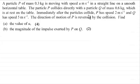Immediately after the particles collide, P has a speed of 2 meters per second and Q has a speed of 5 meters per second. The direction of motion of P is reversed by the collision and we've got to find in part A the value of u and in part B the magnitude of the impulse exerted by P on Q.